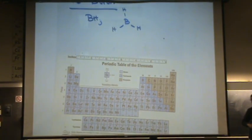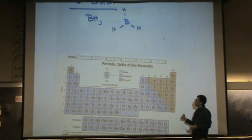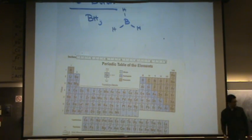Boron doesn't have an octet, but that's okay. It can have an incomplete octet, just like hydrogen.